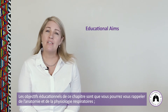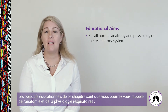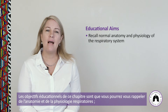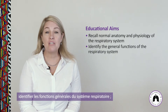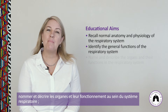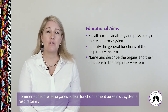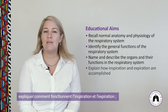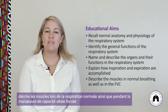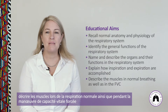The educational aims of this chapter are that you will be able to recall normal anatomy and physiology of the respiratory system, identify general functions of the respiratory system, name and describe the organs and their functions in the respiratory system, explain how inspiration and expiration are accomplished, and describe the muscles in normal breathing as well as in the forced vital capacity maneuver.